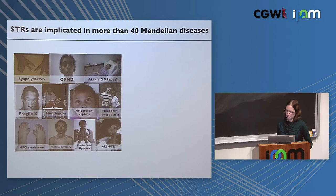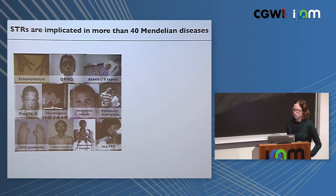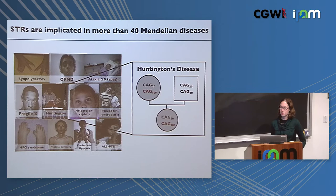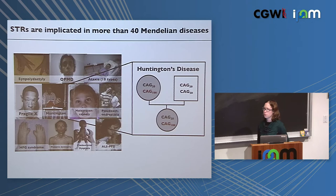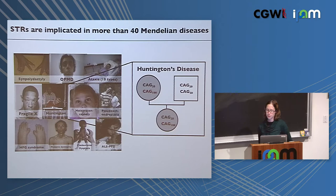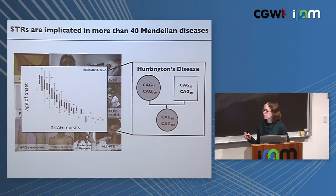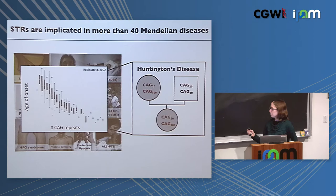We've known for several decades that STRs are important for a variety of Mendelian disorders. One well-known example is Huntington's disease, which has a CAG repeat in a coding region of the HTT gene. Most people have about 20 copies of CAG, but in some cases it expands to 40 or more, causing this devastating neurological disorder. Fascinatingly, this repeat doesn't act as a simple switch — there's a quantitative phenotype. If you plot CAG repeat number versus age of onset, more repeats means earlier onset. This repeat acts as a dial controlling phenotype severity.